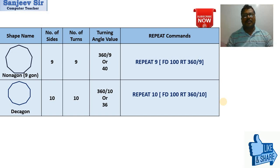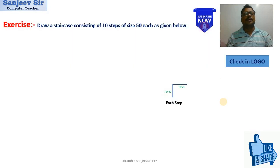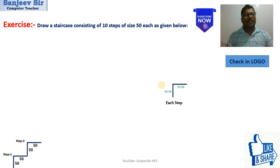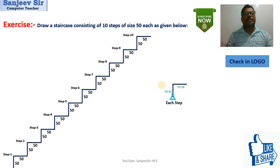Now we are going to discuss a new type of repeat command with different shapes. The question is: draw a staircase consisting of 10 steps of size 50 each. Each step looks like this — step 1, step 2, step 3, step 4, step 5, and so on up to step 10. You have to display and print this staircase.